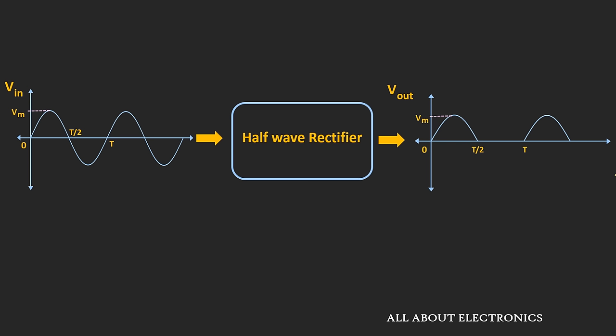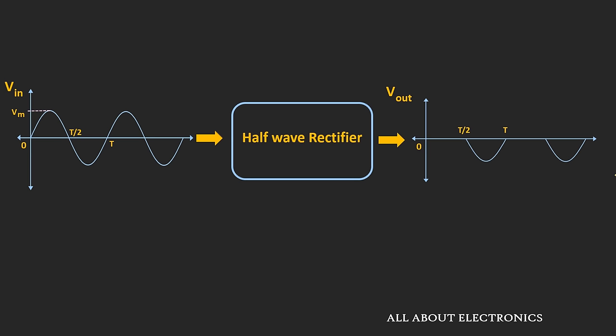Like here, as you can see, it only allows the positive half cycle and it completely rejects the negative half cycle. And similarly, it is also possible to get a waveform where this rectifier completely blocks the positive half cycle and only passes the negative half cycle. So in this way, this half wave rectifier converts the AC signal into the pulsating DC signal. Now let's see the circuit of this half wave rectifier.